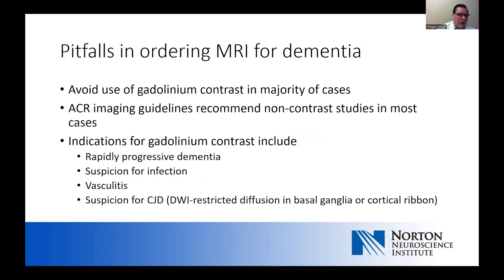T2-star-weighted, gradient recall echo, or susceptibility-weighted images are sensitive for microbleeds and blood products. There are some pitfalls in ordering MRI: for dementia evaluations, you really do not need gadolinium contrast. The majority of guidelines and the American College of Radiology recommend non-contrast studies in most cases. Gadolinium is indicated for very rapidly progressive dementias where there's suspicion for infection or vasculitis. Most MR sequences nowadays include diffusion-weighted images, which are particularly important for rapidly progressive dementia — especially when considering Creutzfeldt-Jakob disease, where we see restricted diffusion in cortical ribbon or basal ganglia.